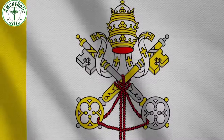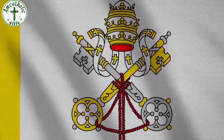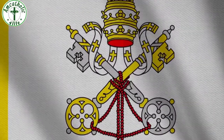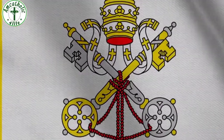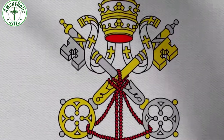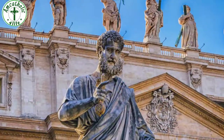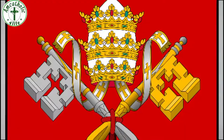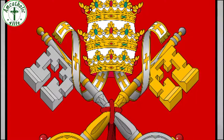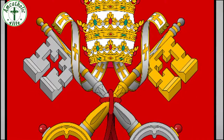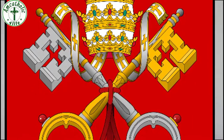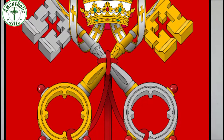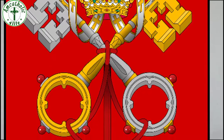The crossed keys are a symbol of the papacy. This is because Christ gave the keys of the Kingdom of Heaven to Peter, who is the first pope. The first key symbolizes the power to bind and loose in heaven, while the second key symbolizes the power to bind and loose on earth.